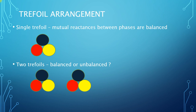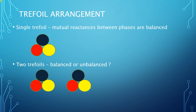Another way of arranging single-core cables is to adopt the trefoil arrangement, where the cable centres are placed at the corners of an equilateral triangle. If we have a single trefoil arrangement, then it is clear that the mutual reactances between the phases will be balanced. If we have two trefoils which are themselves individually balanced, will the overall circuit comprising the two parallel three-phase circuits be balanced or unbalanced? Will currents circulate between the two individual trefoils? This was the question which originally motivated me to look at this issue.